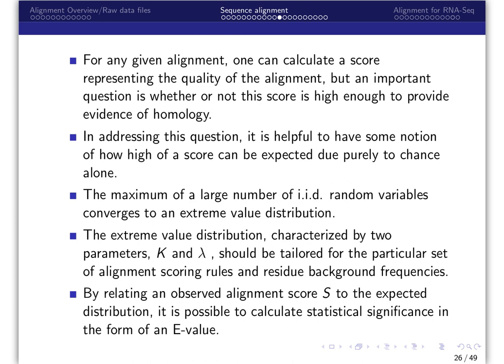Likewise, the maximum of a large number of independent and identically distributed random variables converges to an extreme value distribution. The extreme value distribution is characterized by two parameters, K and lambda, which should be tailored for the particular alignment scoring roles and residue background frequencies. By relating an observed alignment score S to the expected distribution, it is possible to calculate statistical significance in the form of an E value.